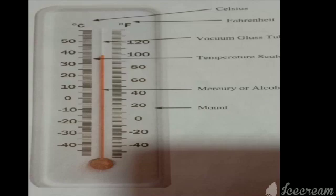Inside this vacuum glass is mercury or alcohol, and this is the mount. Now, different types of thermometers are used for measuring the temperature of air.